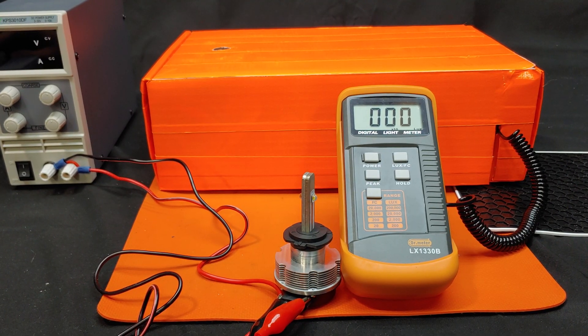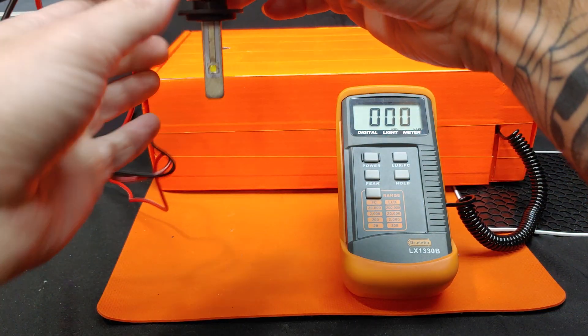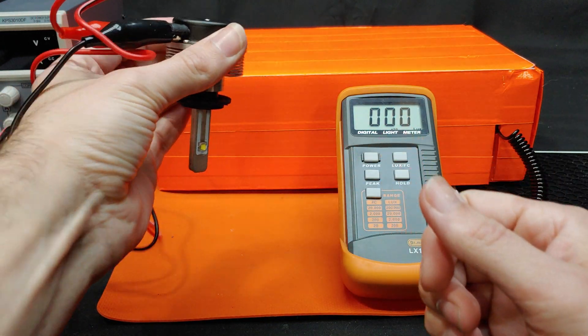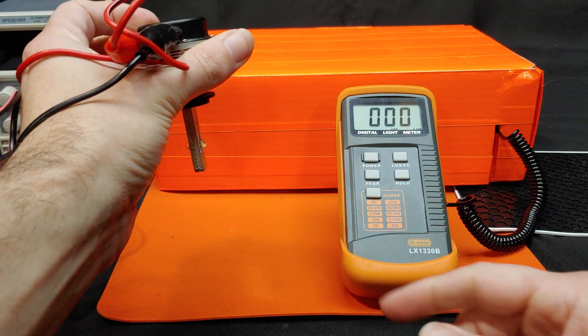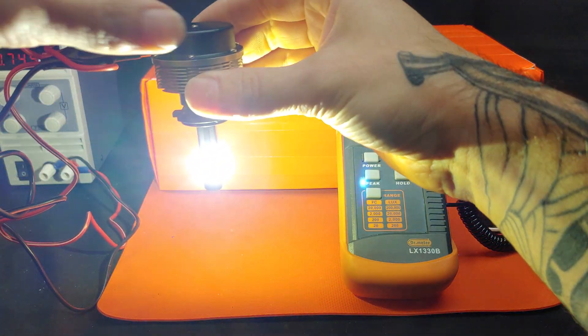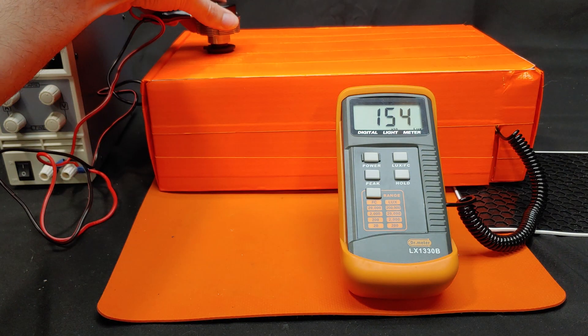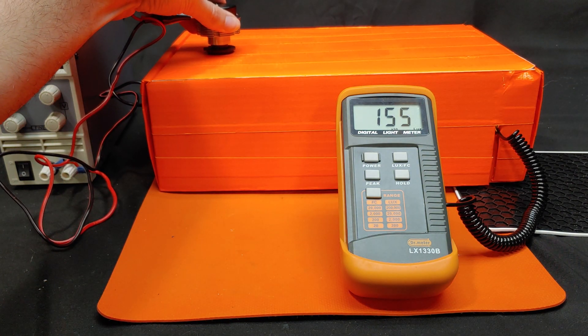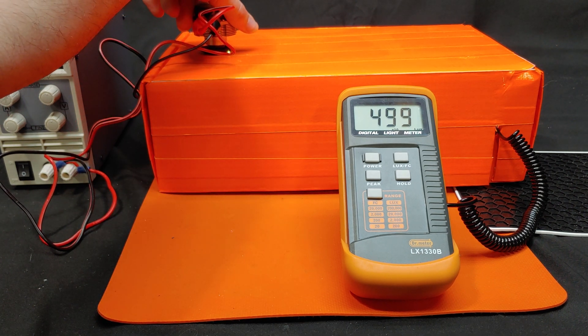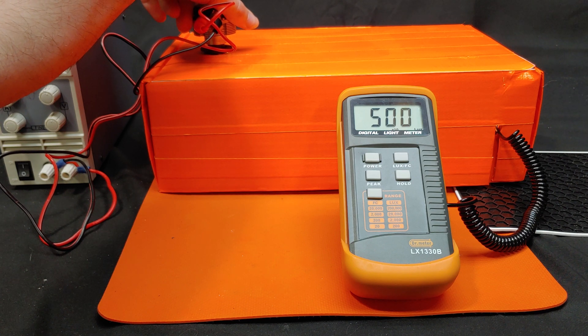We have our meter set to times 10. We are going to start by putting the bulb in with the dark spot facing the sensor, and then rotate 90 degrees to get the full brightness. So from 0, we go up to about 155, and we'll rotate 90 degrees for a peak brightness of 500 lux.